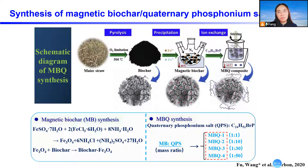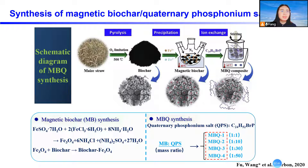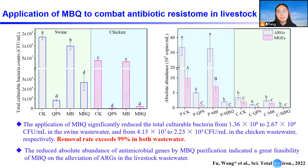In agricultural fields, water irrigation is a potential contamination source. We tried using biochar combined with quaternary phosphonium salt to tackle antibiotic-resistant host bacteria and also extracellular DNA, which is a vector for transmission of ARGs. Using swine and chicken wastewater, this material could remove about 99% of ARGs from the wastewater in just one treatment, showing very high removal efficiency.